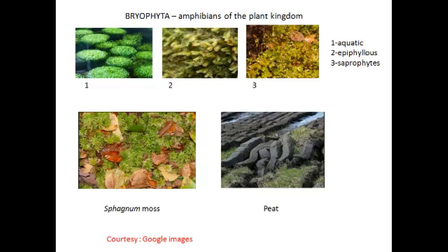Sphagnum is also known as peat moss, where peat is formed by slowing down the decaying process. The gradual compression and carbonization of partially decomposed vegetative matter in bogs gives rise to a dark-colored substance called peat. Peat is used as fuel, and lower layers of peat form coal. Peat is also used in production of ethyl alcohol, ammonium sulfate, ammonia, dye, paraffin, tannins, etc. Peat is also found to improve soil texture in horticulture. The travertine rock deposits formed are extensively used as building stones.